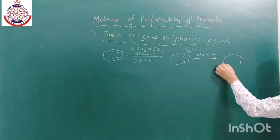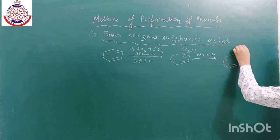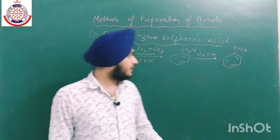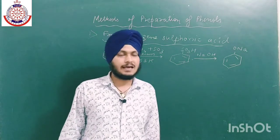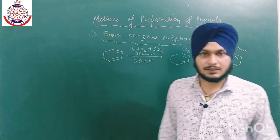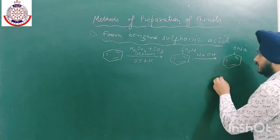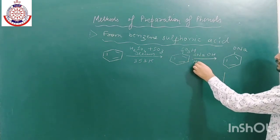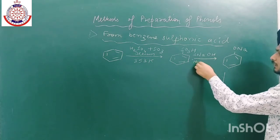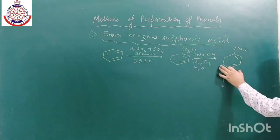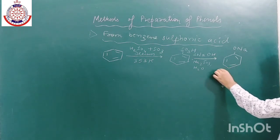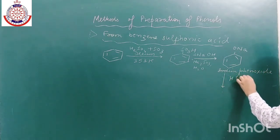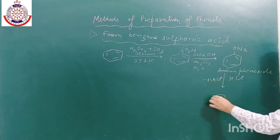The next step is to react benzene sulfonic acid with an alkali. In order to make phenol, we first prepare sodium phenoxide. The byproducts here are Na₂SO₃ and water. This gives us sodium phenoxide — a compound with a negative charge on the oxygen and sodium as a counterion.